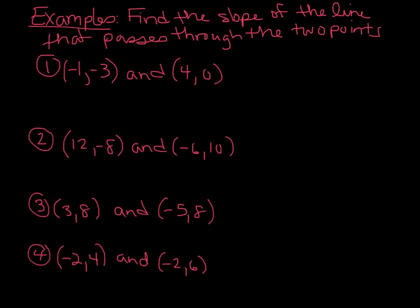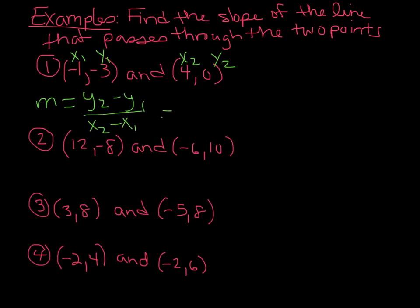Let's do a few examples. I'll do the first one for you, and then I would like you to do the other three on your own. For number one, we want to find the slope of the line that passes through the two points negative 1, negative 3 and 4, 0. I'm going to call negative 1, negative 3 as X1 and Y1, and 4, 0 as X2 and Y2. You plug those into the formula and solve it out. In the end, you will get a slope of 3 over 5.